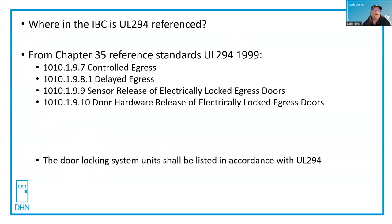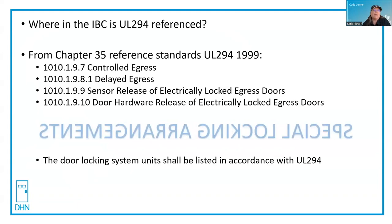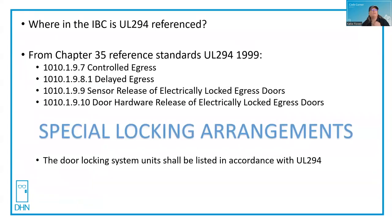What do these sections all have in common? They're typically using some kind of a mag lock or an electrified lock that locks the door on the egress side. In other words, these are special locking arrangements. The door locking system units shall be listed in accordance with UL 294 — every one of these has that as a listed criteria, and so the door locking system units are what needs to comply.